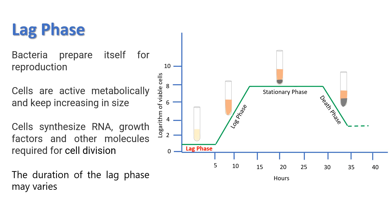Lag phase: In this phase, the bacteria prepare themselves for reproduction and become acclimatized to the environment. The cells are metabolically active and keep increasing in size. The cells synthesize RNA, growth factors, and other molecules required for cell division. The duration of the lag phase varies with the bacterial species. It may vary from one hour to several days.